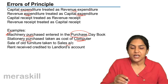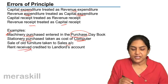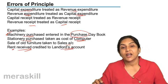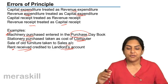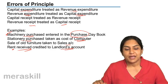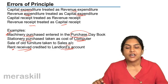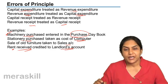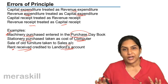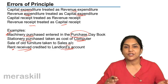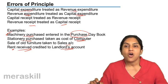Suppose a revenue receipt is taken as a capital receipt: rent received is a revenue receipt. Instead of taking this to rent account, we take it to the landlord's account — a person's account — as if there is a liability to pay to the landlord. These are examples of errors of principle, where we fail to distinguish capital and revenue expenditure, or capital receipt and revenue receipt.